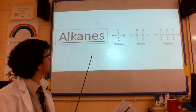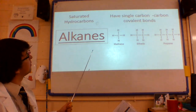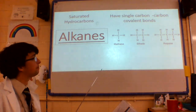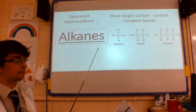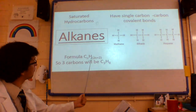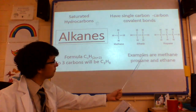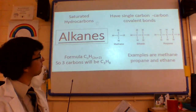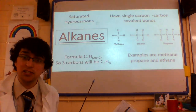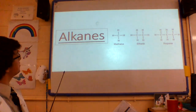Alkanes are saturated hydrocarbons. Alkanes have single carbon-carbon covalent bonds. Alkanes are CnH2n plus 2, so examples are methane, propane and ethane. Got it. Let's do it one more time again.